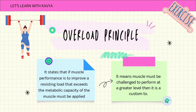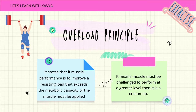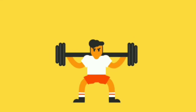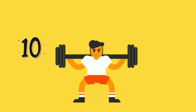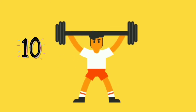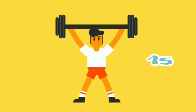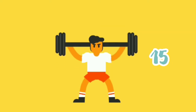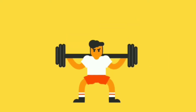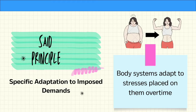The overload principle states that if muscle performance is to improve, a resisting load that exceeds the metabolic capacity of the muscle must be applied. It means the muscle must be challenged to perform at a greater level than it is accustomed to. For example, if you can lift 10 kg weights very easily, then you must lift 15 kg or more to get the benefits of training.